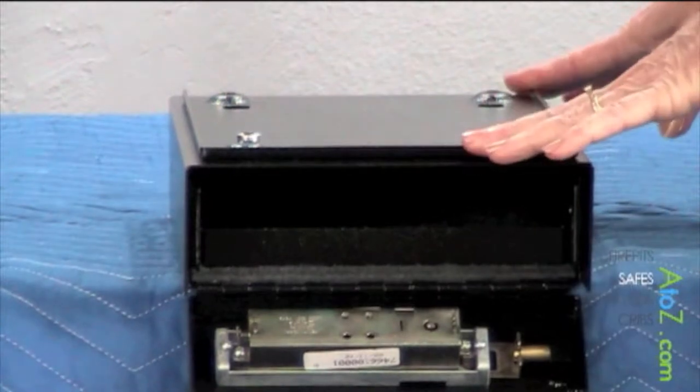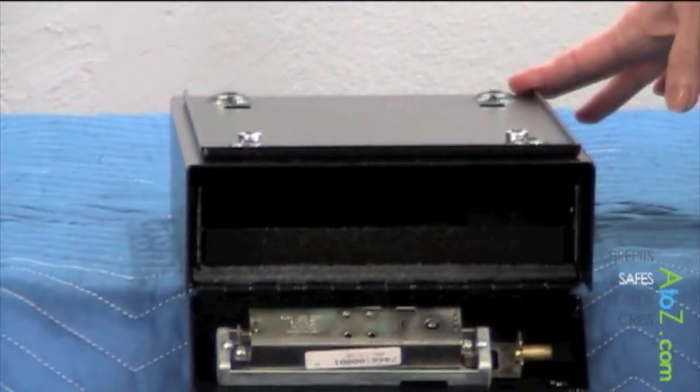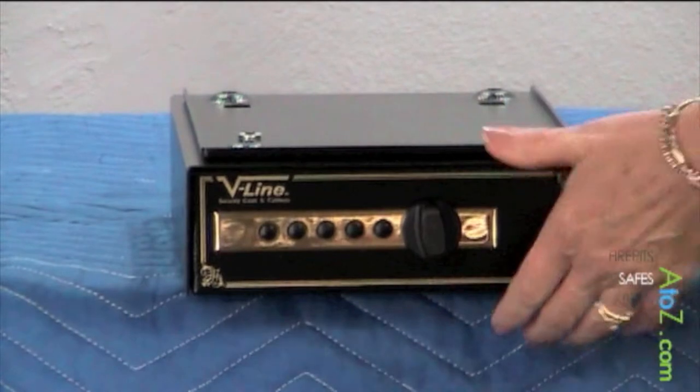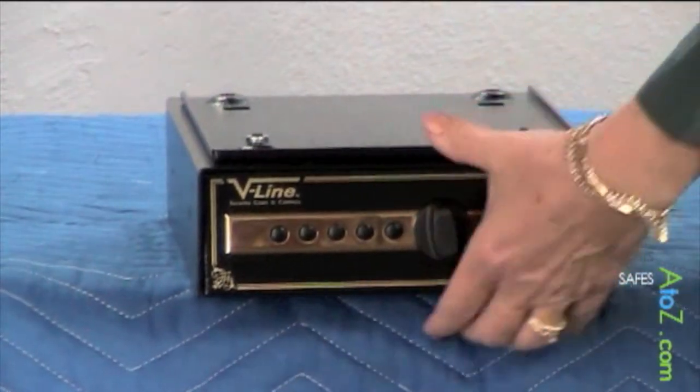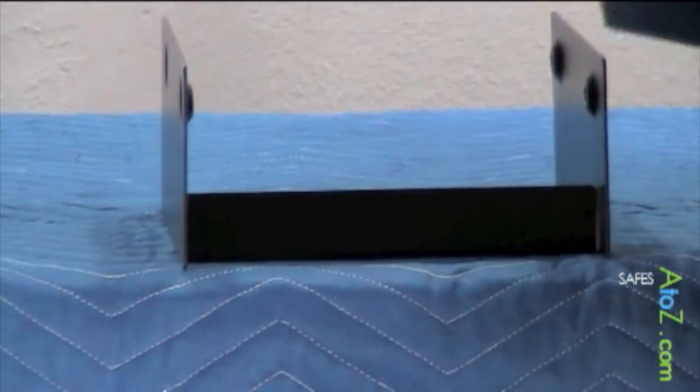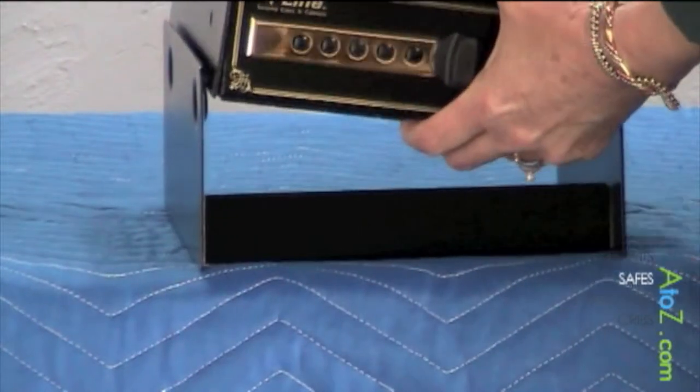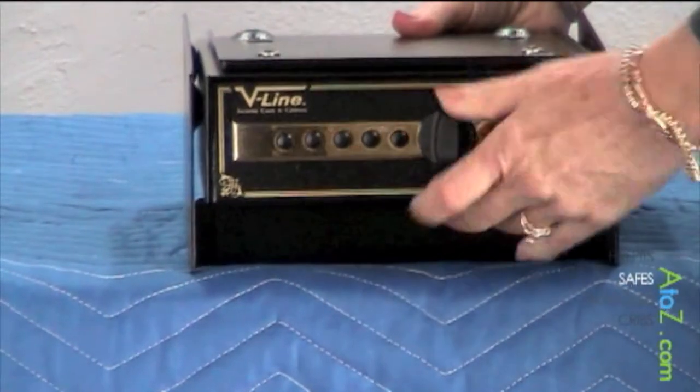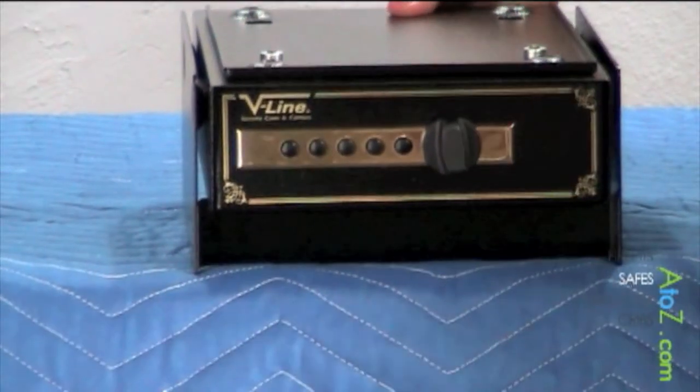It comes standard with the quick-release mounting bracket, so it mounts underneath the surface. It is also available with the universal mounting bracket, and the advantage to this is if you want to set it on top of a shelf, you can bolt it right in there, and it still gives you easy access to your firearm.